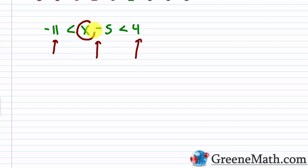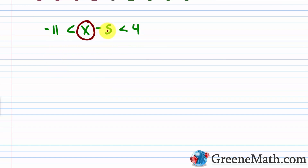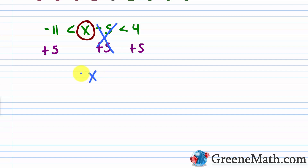My goal is to isolate the variable x in the middle. I want x to be between two numbers, so I want to add 5 to each part because I'm subtracting 5 in the middle. Adding 5 cancels the negative 5, giving us x in the middle. On the left, negative 11 plus 5 is negative 6, and on the right, 4 plus 5 is 9. So x is between negative 6 and 9 — greater than negative 6 and less than 9.